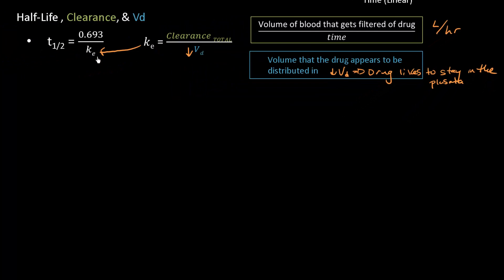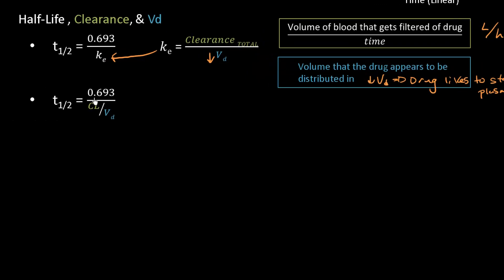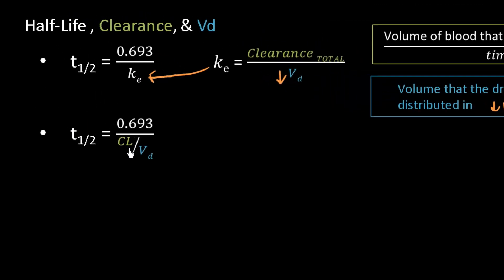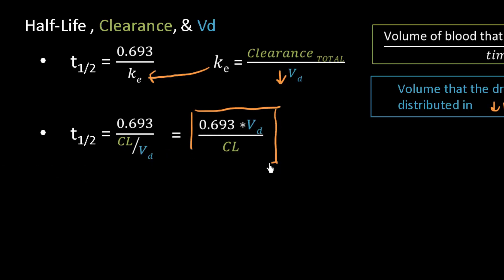Plugging clearance over volume of distribution into the half-life equation, we get: t one-half equals 0.693 divided by clearance over volume of distribution. Multiplying by the reciprocal gives the equation you need to memorize: t one-half equals 0.693 times the volume of distribution over clearance. In a future video, we'll discuss clearance and how it relates to drug excretion — make sure to subscribe.